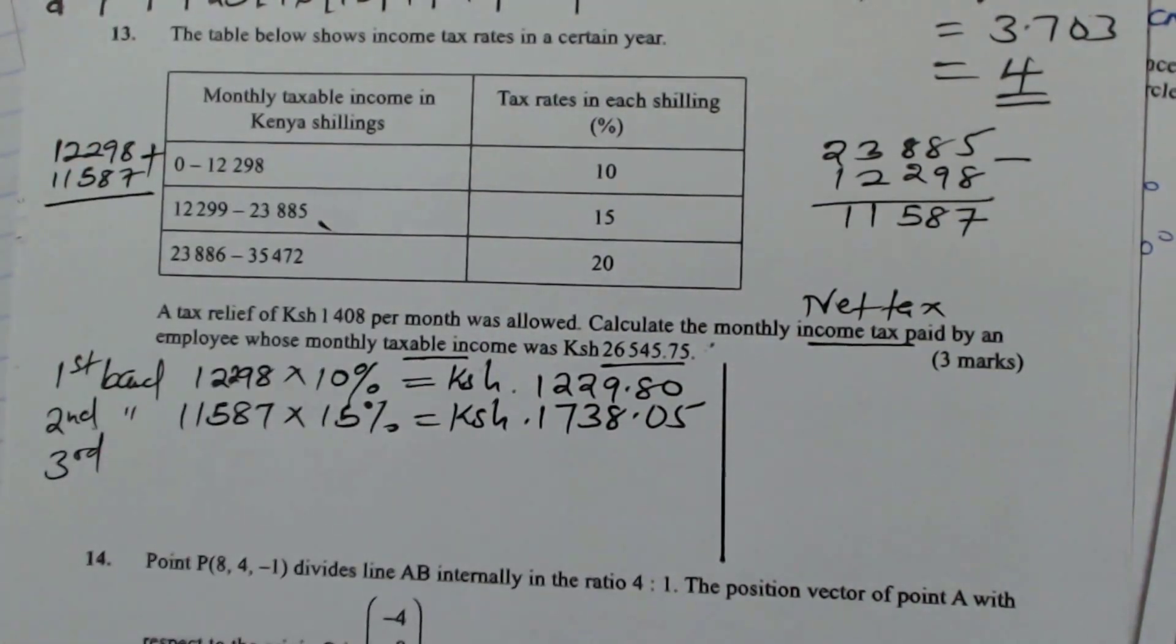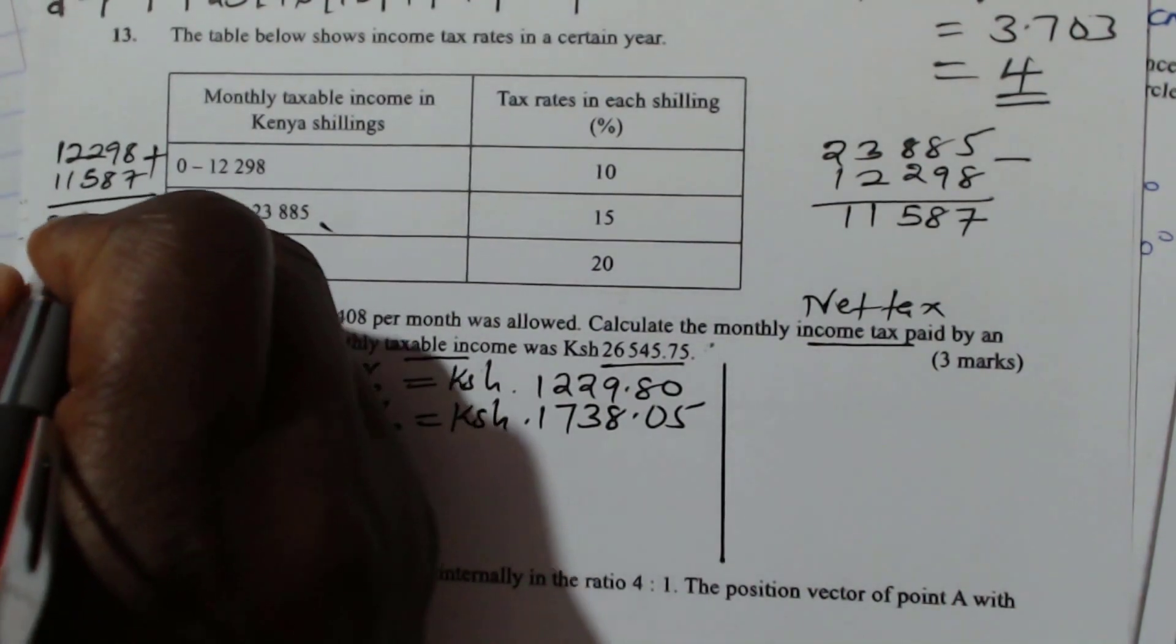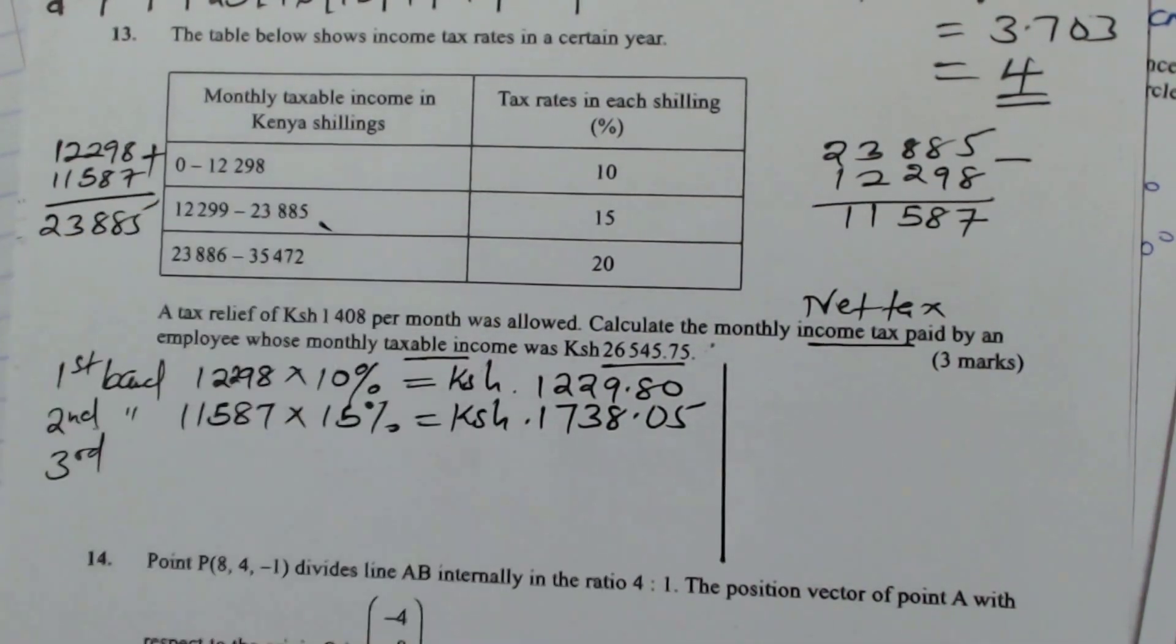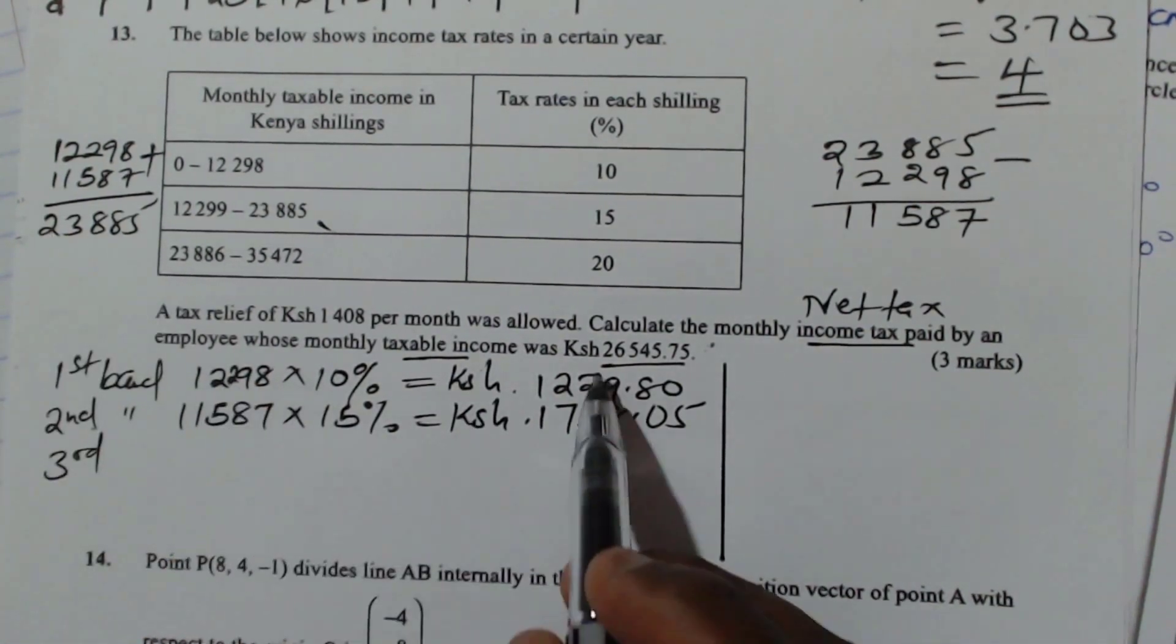So when you add those two, we add the two, we get 23,885. This is the amount that you have taxed. This is the taxable income. This is the tax.